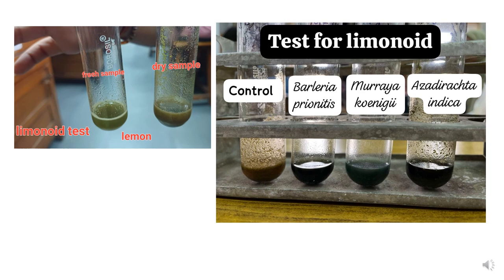In the second picture, the first test tube is the control, showing a negative result — no blue-green color. The second plant is Berylaria prionitis, which is your filamassa, and you can see appearance of blue-green color in this tube. The third plant is Murraya koenigii, which is kadipatta — you see a very nice blue-green color, so this is also a positive test. The last tube is Azadirachta indica, which is neem, and it is also showing a blue-green positive test. So the last three tubes are showing positive tests for limonoids, while the first control tube has no blue-green color.